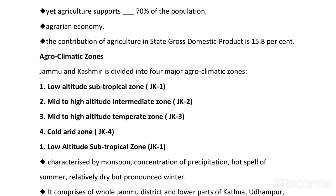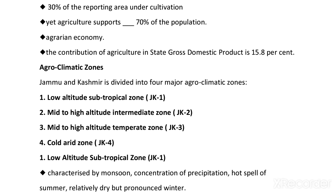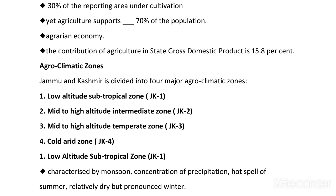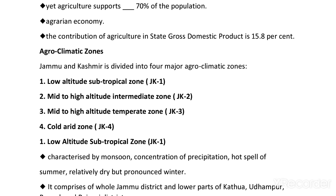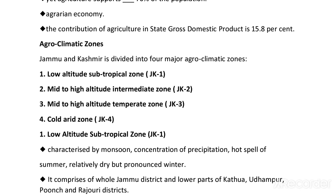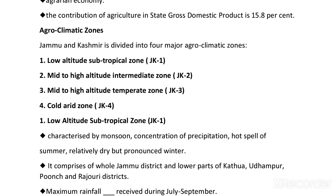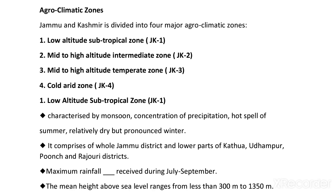State Jammu and Kashmir is divided into agro-climatic zones due to its climatic diversity. Jammu and Kashmir has four major agro-climatic zones: first is the low altitude subtropical zone (JK1); second is the mid to high altitude intermediate zone (JK2); third is the mid to high altitude temperate zone (JK3); and fourth is the cold arid zone (JK4).